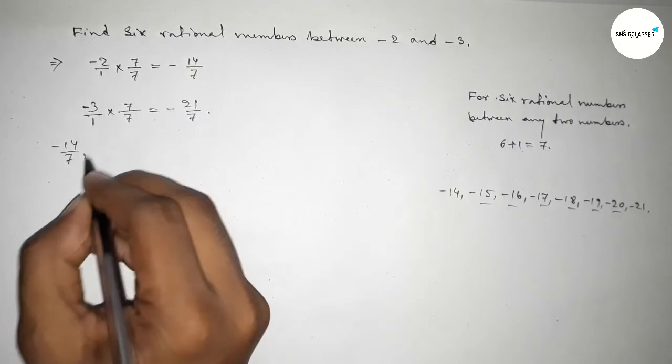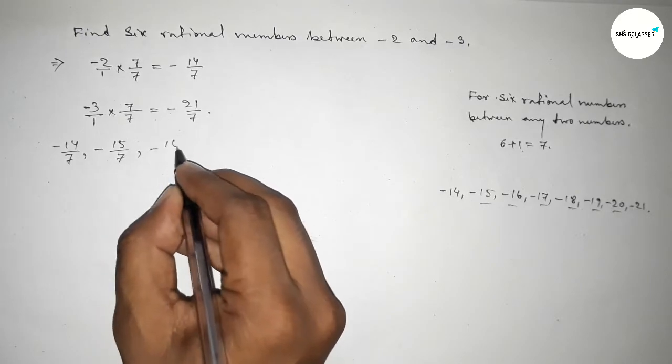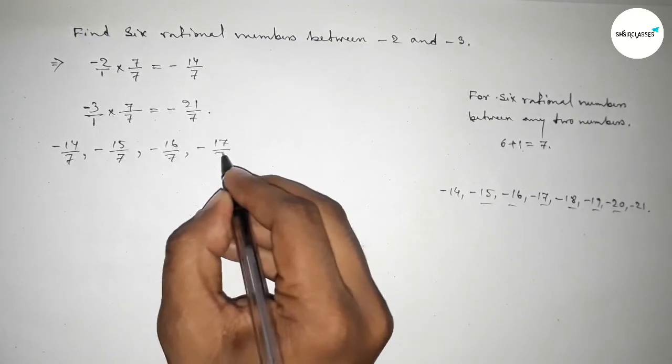Now write down all the rational numbers here. First one minus 14 over 7, minus 15 over 7, minus 16 over 7, up to minus 21 over 7.